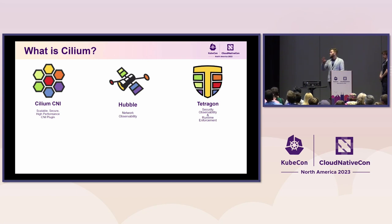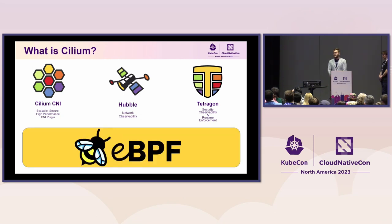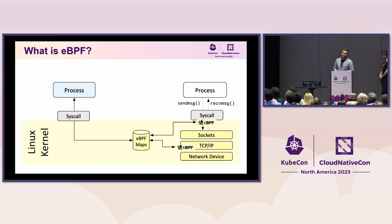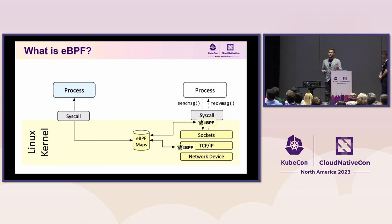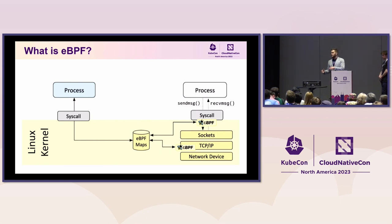What all these projects have in common is that they utilize eBPF. You can think of it as writing small programs that can be attached to different events within the Linux kernel. For example, if you are interested in observability, you can export information from the kernel to an eBPF map, and then from user space, you can access that data.